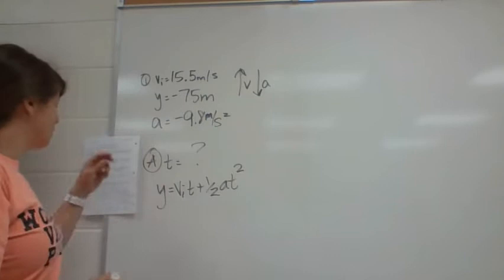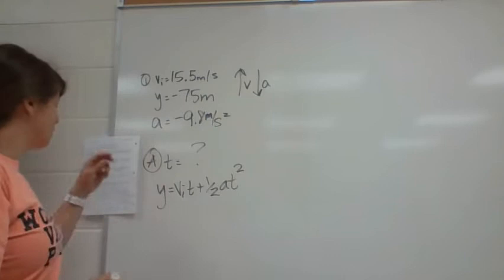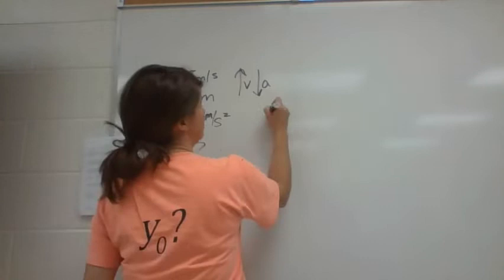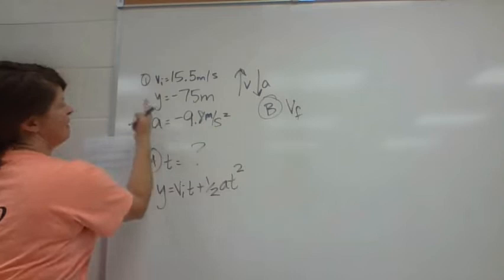So actually part B says what's the velocity right before it hits the ground? So we're actually going to solve part B first. So if I want VF and I have VI, Y, and A, I'm going to use this equation.